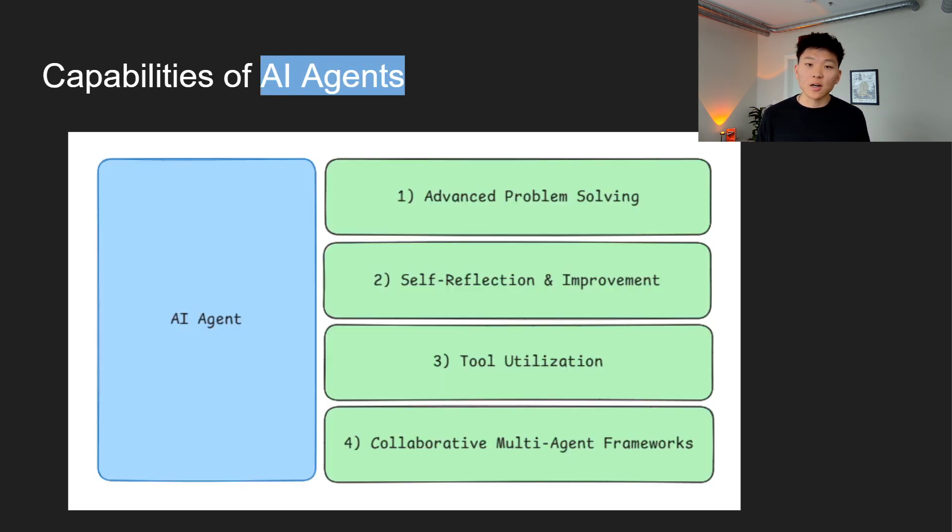So now that we understand the core components, let's talk about the capabilities of AI agents. The first one is advanced problem solving. The agent can analyze situations, plan tasks, and then execute on those plans. Whether it's generating a detailed project report, writing functional code, or creating summaries of vast data, agents are able to handle repetitive tasks that would take humans hours to complete.